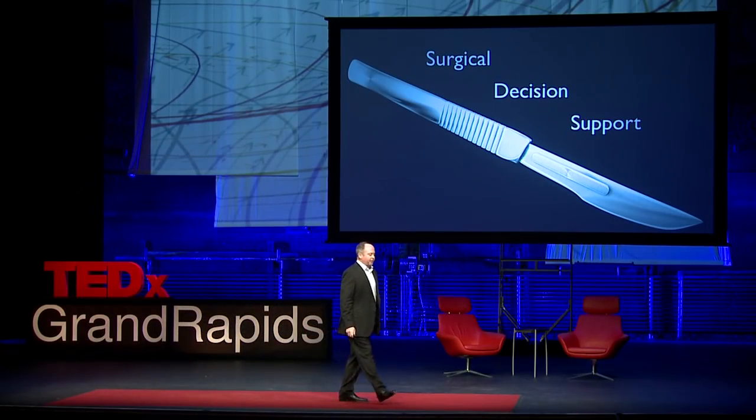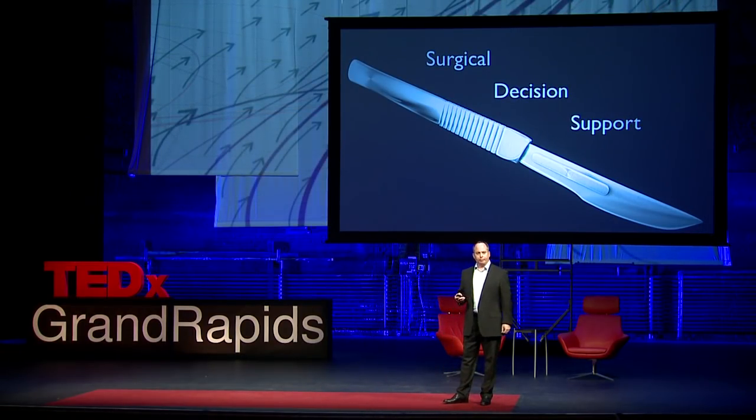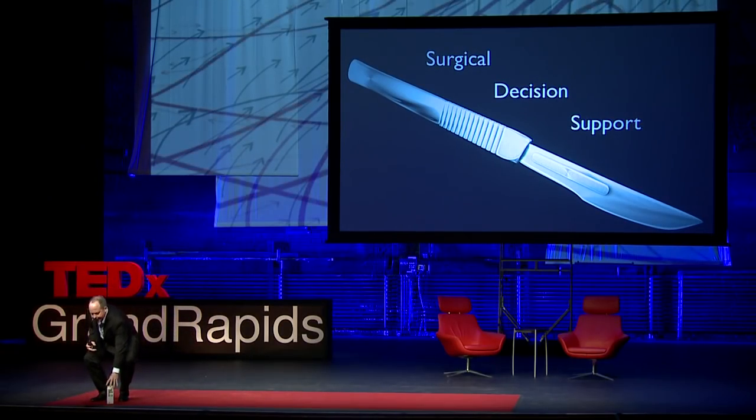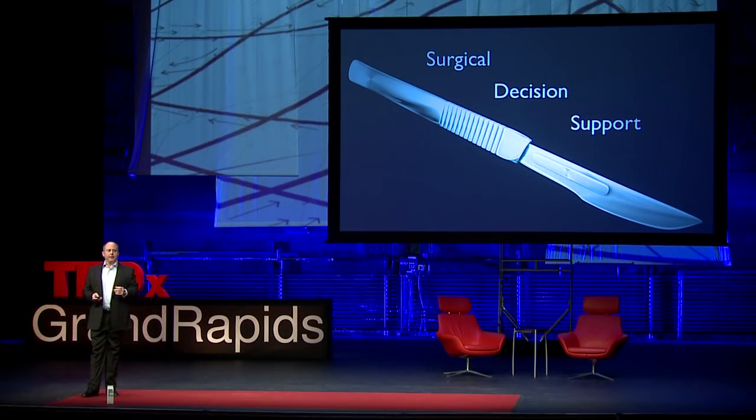Surgical decision support is something that's becoming more and more relevant, where genomics can help inform the surgeon on whether surgery will prevent or cure some disease. A common example right now is breast cancer — the BRCA1 and BRCA2 genes. These are breast cancer risk genes, and if you have certain variants of these genes, you have a highly increased risk of getting breast and ovarian cancer. So a female can elect to have her breasts and ovaries removed prophylactically to prevent breast and ovarian cancer.